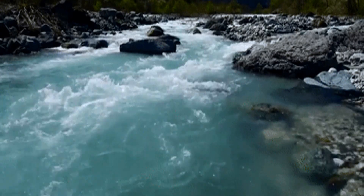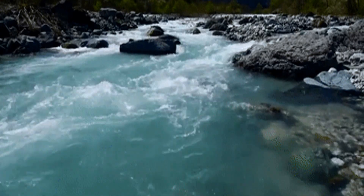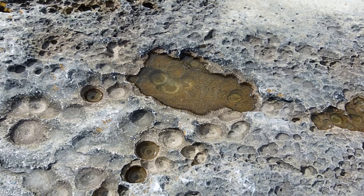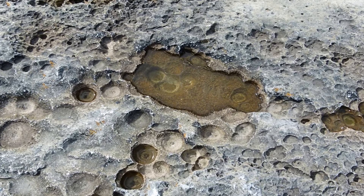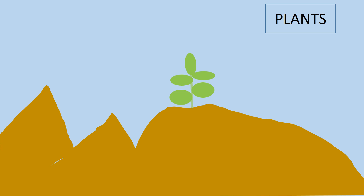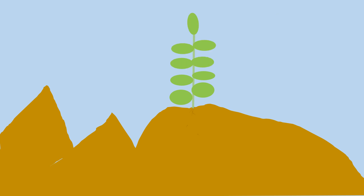When water flows on rocks, or falls as rain on rocks, water rubs the rocks and causes weathering. Plants also cause weathering. The roots of plants, as they grow down, need space, so they create cracks in rocks, which results in the breakdown of rocks.